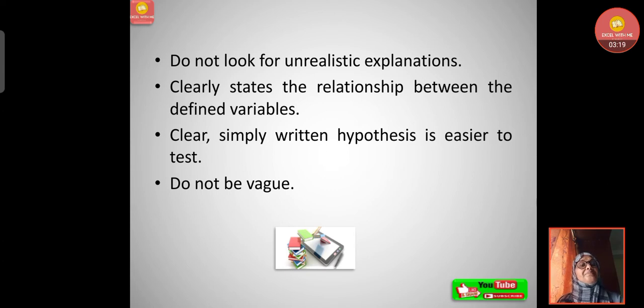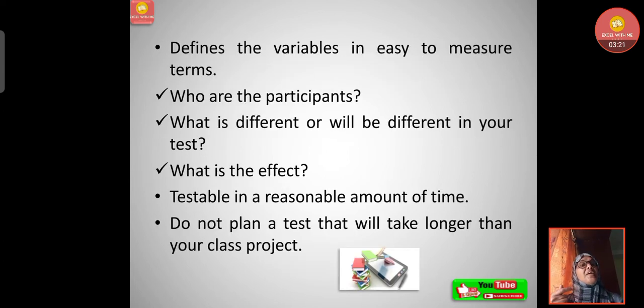Then defines the variables in easy to measure terms. Who are the participants? You should be clear who will be the participants of your problem. Suppose if I am taking about the academic achievement of secondary school students, my participant should be clear in my mind - that is boys and girls, achievement of boys and girls or both, or rural schools or urban schools, private or government schools.